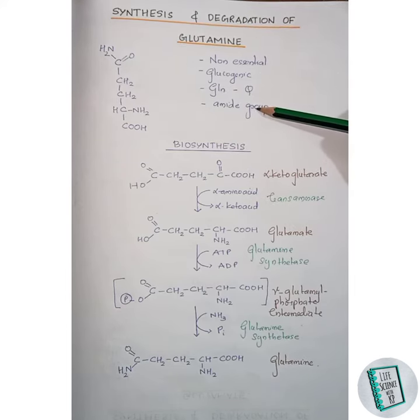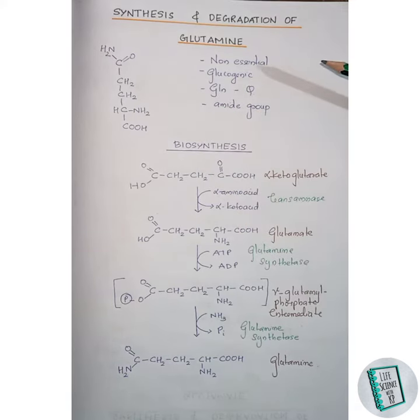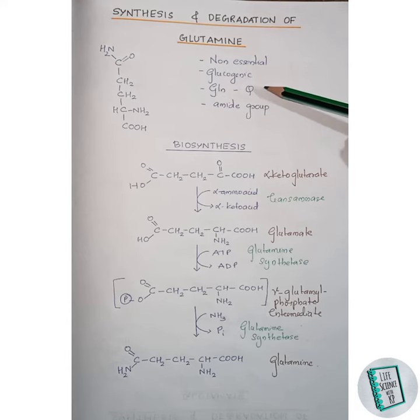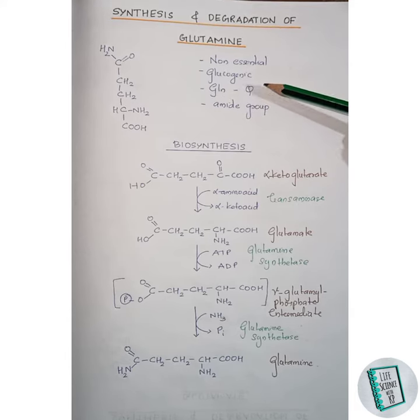Glutamine has an amide group in its structure. The three-letter representation of glutamine is GLN and the one-letter representation is capital Q.